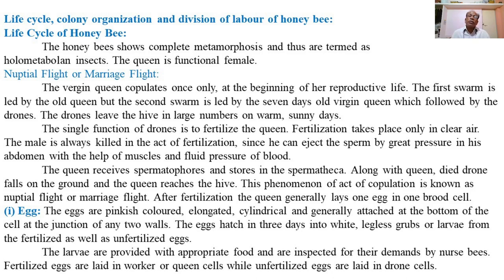Females — the workers — are developed from thousands of fertilized eggs laid by the queen into the worker brood cells, which develop into large numbers of workers in the brood comb.